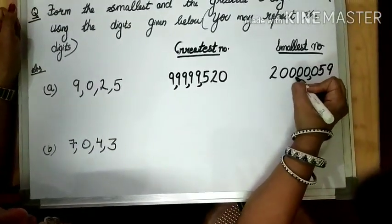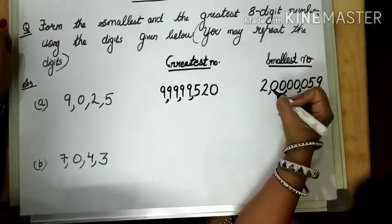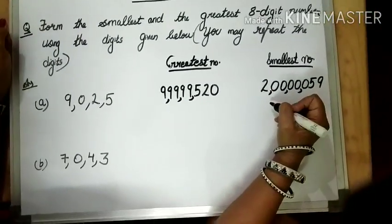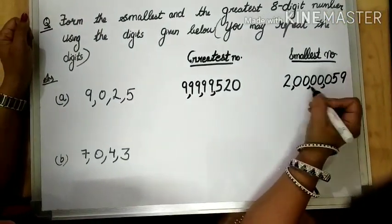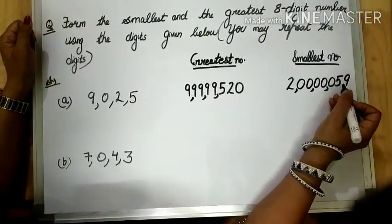Now, insert the commas. What number did you get? You got 2 crore and 59.